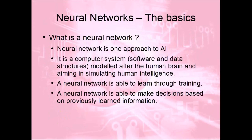A neural network is a subset of artificial intelligence. It consists of two things: software and data. The software and data together try to model something like the human brain and simulate human intelligence. Very importantly, a neural network is able to learn based on data you give it. This is the complete opposite of rule-based programming, where as a developer you put every single rule in — if it's not in the rule, the program won't do it. A neural network will do things you didn't explicitly tell it to do, because it learns from the data.